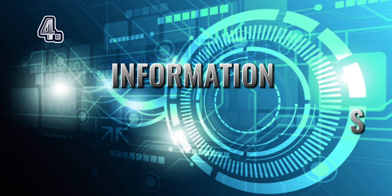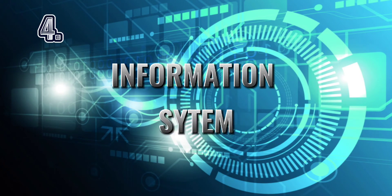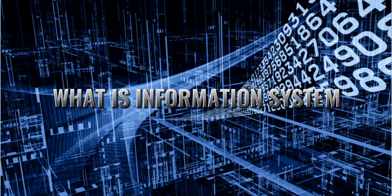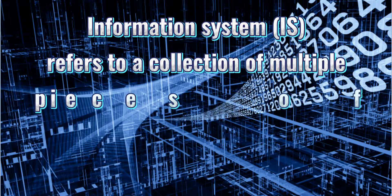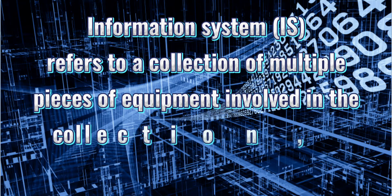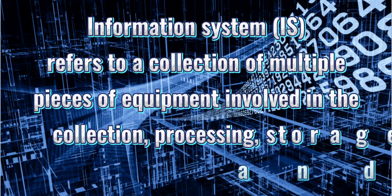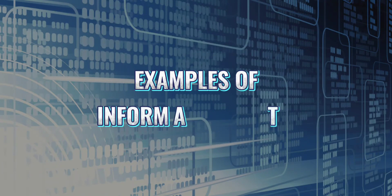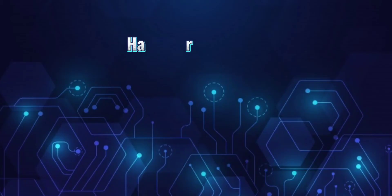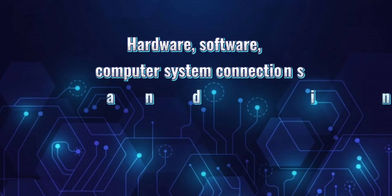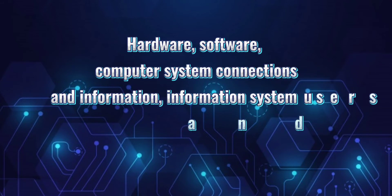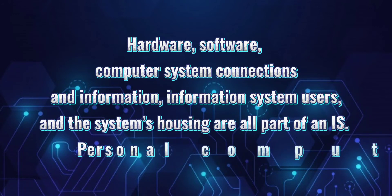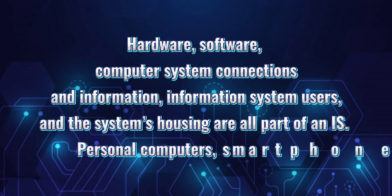Let's proceed to the fourth topic, which is the information system. An information system, or IS, refers to a collection of multiple pieces of equipment involved in the collection, processing, storage, and dissemination of information. Examples include hardware, software, computer system connections, information, information system users, and the system housing — such as personal computers and smartphones.